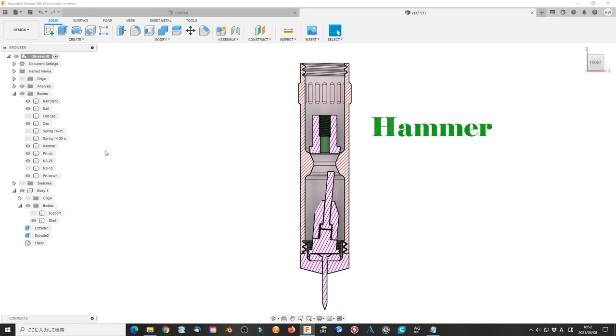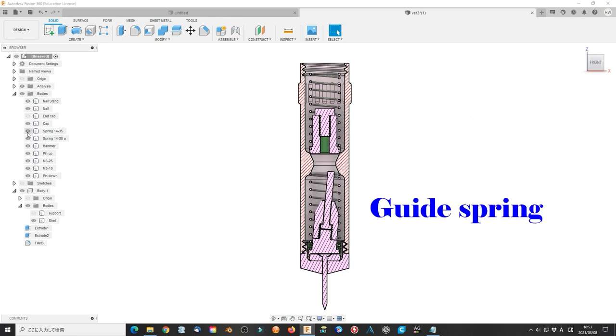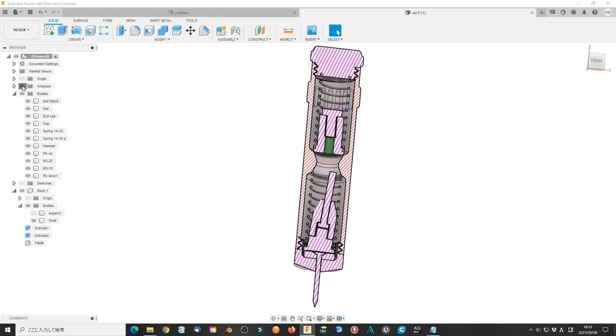For the hammer, I use an M5 nut fixed to a PLA socket. To ensure the M3 nut can easily insert into the hammer, M3 nut head should be polished later.